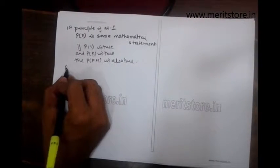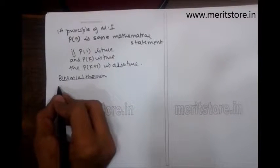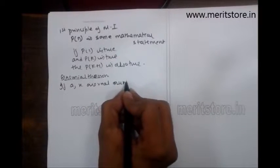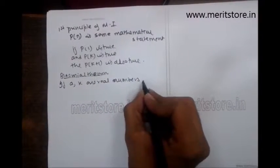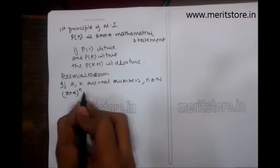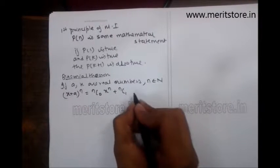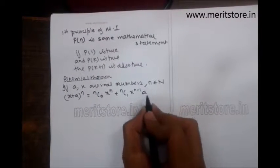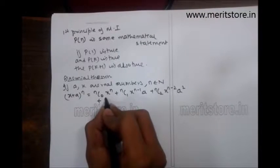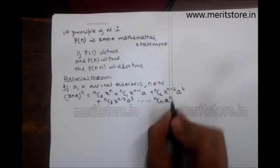The next thing is binomial theorem. Under binomial, if a and x are real numbers and n belongs to natural numbers, then x plus a the whole raised to n can be expanded as nc0 x raised to n plus nc1 x raised to n minus 1 a plus nc2 x raised to n minus 2 a square plus nc3 x raised to n minus 3 a cube. This will go on till ncn a raised to n.